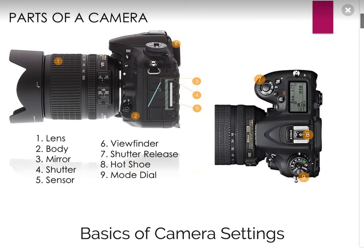When people talk about mirrorless cameras, it just means there is no mirror. Instead of the mirror popping up, the sensor — which is right back here — just turns on and off. The lens is right here, and then the body is this whole area here.